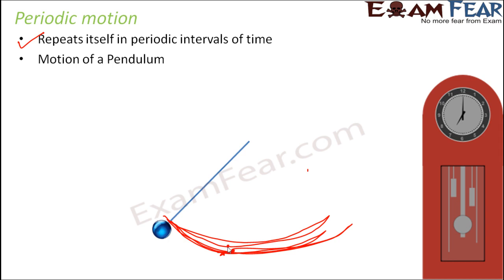The motion of the pendulum is the best example of periodic motion. You can also relate to many things around you where periodic motion takes place — think of a swing. If you go to a children's park and put a little force on it, after that it keeps moving on its own, repeating the same pattern. That is a periodic motion, also known as oscillatory motion. One complete pattern that repeats is termed as one oscillation. You will learn more about oscillatory motion in higher classes.